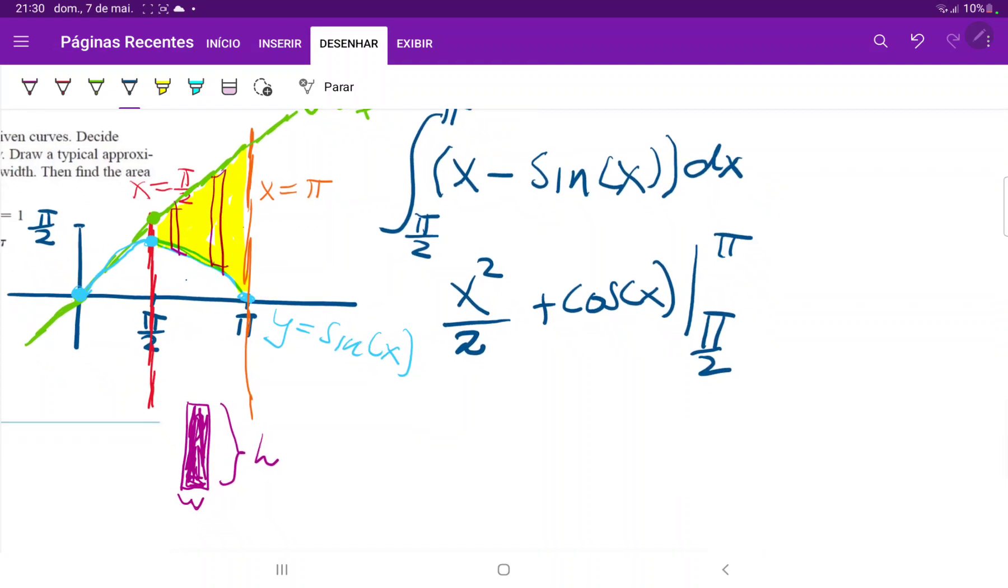So when we plug in our bounds, this will give us pi squared over 2 plus cosine of pi, which is negative one, and then minus pi over 2 squared over 2, and then minus cosine of pi over 2, which is just zero.